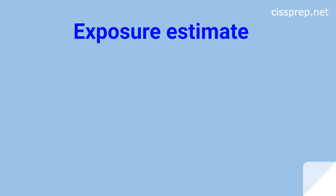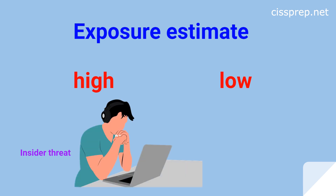The first is called an exposure estimate. This is basically giving a high or low label to the risk. The Common Body of Knowledge points this out for those of you who have little experience working in the risk management domain. Most of you with experience do this on a daily basis — you might say that a certain risk is high or a certain risk is low. An example of this could be insider threat.